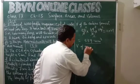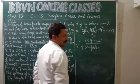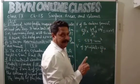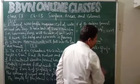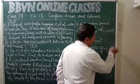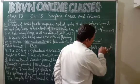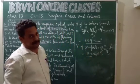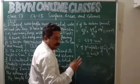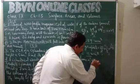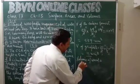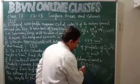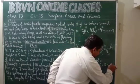Now, volume of graphite: the diameter of graphite is 1 millimeter, so radius is 1 by 2, r square is 1 by 4, into h which is 14. That gives 11 millimeter cube — this is the volume of graphite used in the pencil. Volume of wood equals volume of entire pencil minus volume of graphite: 539 minus 11 equals 528 millimeter cube.